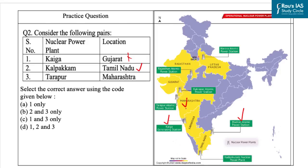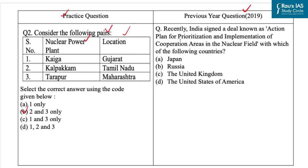The third one is Tarapur. Tarapur is located in Palghar district in Maharashtra and was the first commercial nuclear power station built in India. So this pair is correct. With this, our correct answer is option B, that is two and three only. The answer of this PYQ is option B, that is Russia.